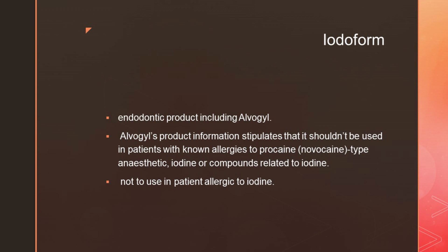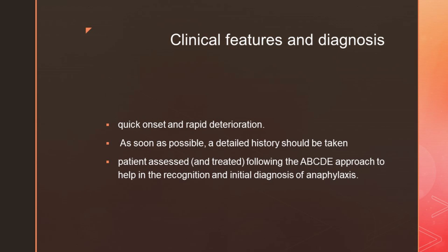The endodontic product Albogyl contains iodoform. Its product information stipulates it should not be used in patients with a known allergy to procaine, novocaine-type anesthetics, iodine, or compounds related to iodine. Albogyl should not be used when a patient gives a history of allergy to iodine.